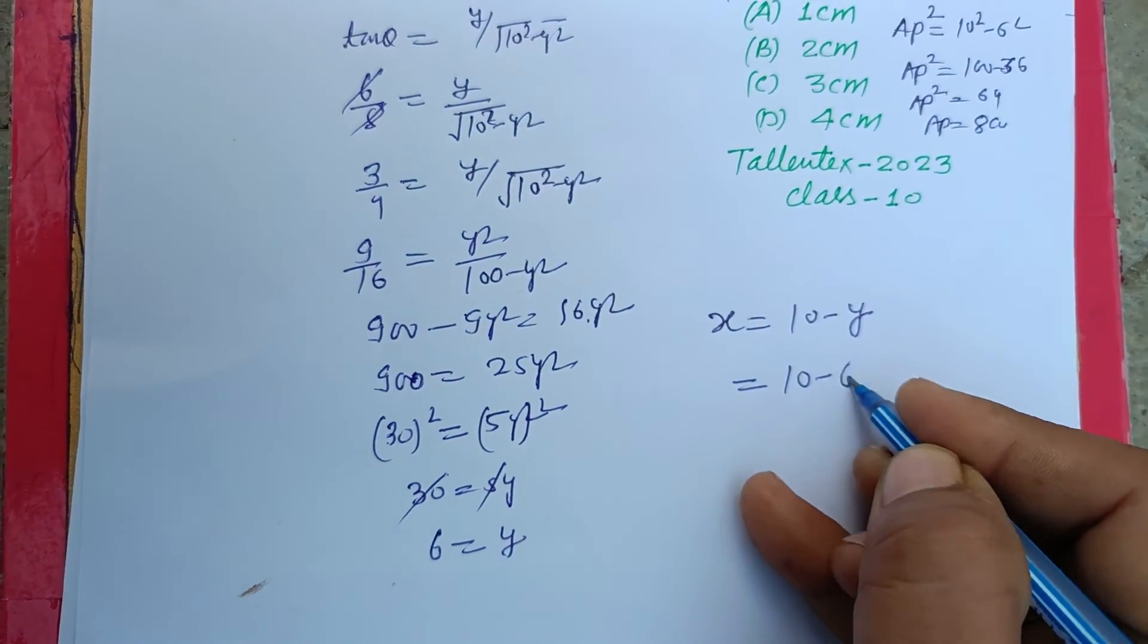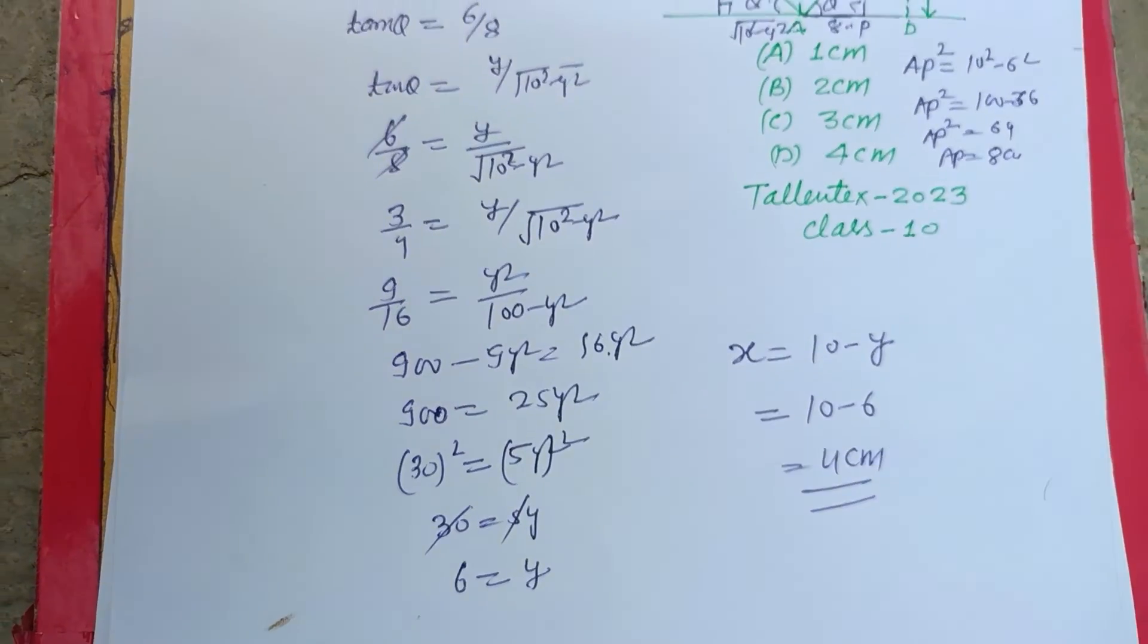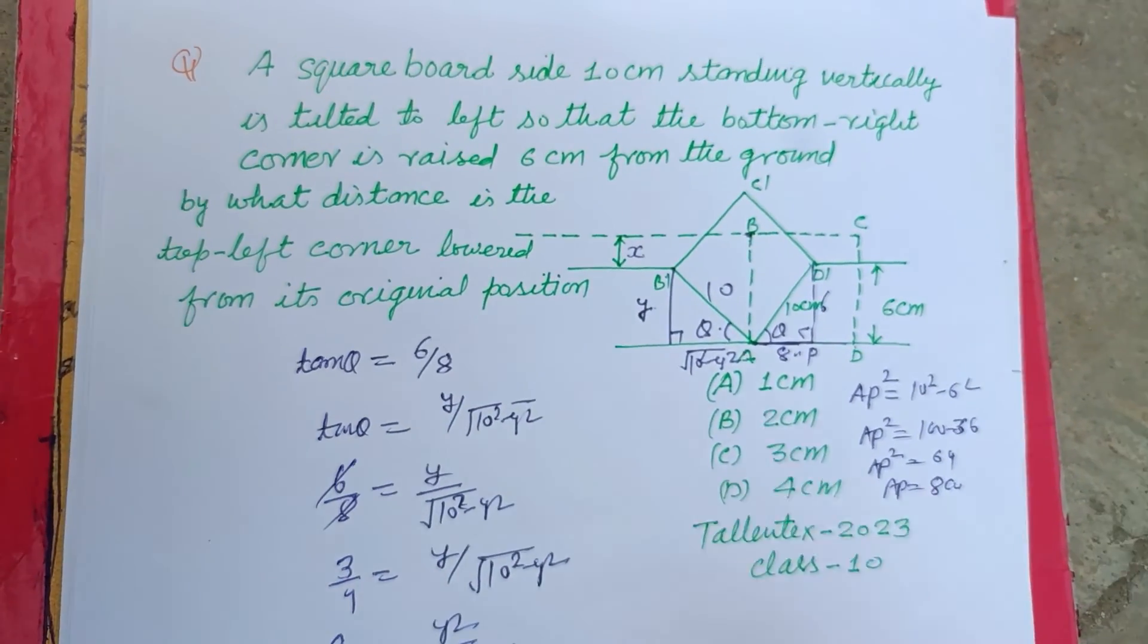So 4 centimeter is the correct answer of this question. These triangles are similar to each other, so we take this condition, tan theta is same.